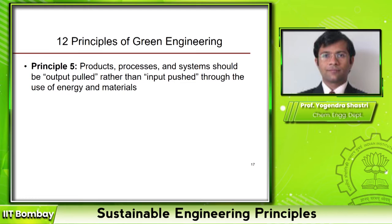Another situation where this is relevant is in supply chains. One option is to keep producing a lot of material and maintain huge inventories at various locations so that when the product is demanded by the consumer, it is available. But this means you need to manufacture a lot of material, maintain inventory — maybe in cold storage — so cost and energy consumption go up. You also run the risk of the product becoming obsolete if it is suddenly no longer in demand.